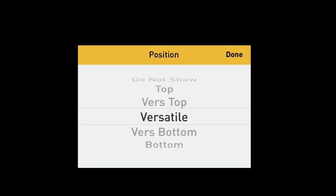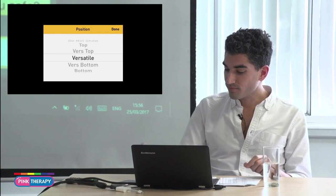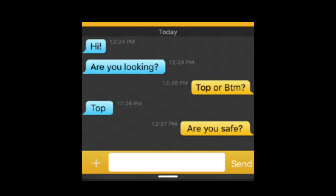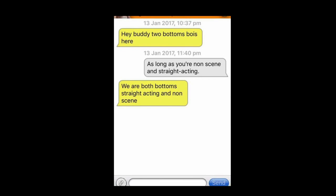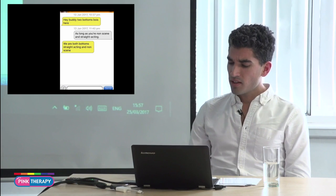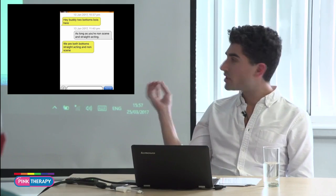One of the themes that seem to resonate a lot with young gay men is this notion of the streamlining of sexual identities, roles and preferences into very clear, unambiguous, marketable categories. Let's take a look at a couple of examples of screenshots that I found online to see exactly what I'm talking about. 'Hi, are you looking? Top or bottom? Top. Are you safe?' 'Hi there. Hello. What are you up to, handsome? Top verse.' 'Hey buddy, two bottom boys here. As long as you're non-scene and straight acting. We are both bottom straight acting and non-scene.'